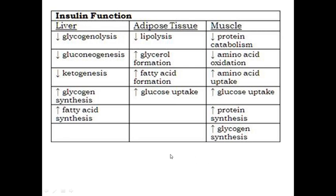Insulin function is very unique. At the beginning, insulin is an anabolic hormone. As an anabolic hormone, insulin increases fatty acid synthesis, increases glycogen synthesis, increases fatty acid formation, and also increases protein synthesis. This is a very, very important role. And also in the liver, insulin decreases glycogen synthesis and also decreases ketogenesis, the formation of ketone bodies. Insulin also decreases protein catabolism and increases protein synthesis by increasing amino acid uptake and decreasing amino acid oxidation.